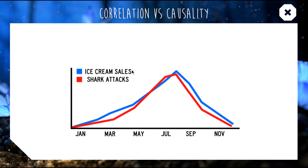In the warmer months more people are swimming so there are more shark attacks, and in warmer months more people buy ice cream. Sometimes two variables are correlated because they are caused by similar things — a third-party causality.